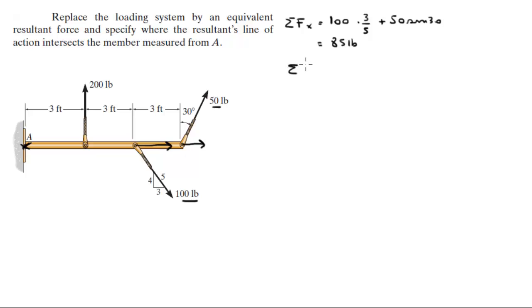The sum of all the forces in the Y are equal to 200 plus 50 cosine of 30 minus 100 times 4 over 5. 100 times 4 over 5 will be the Y component of this force and 50 sine of 30 is the Y component of this force. When you add this up together you get that this is equal to positive 163.3 pounds.